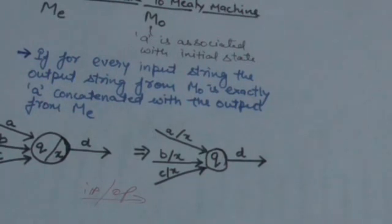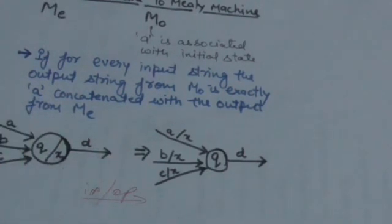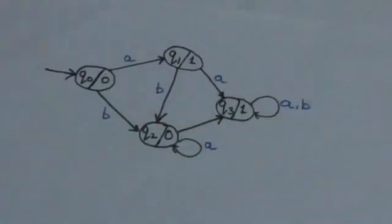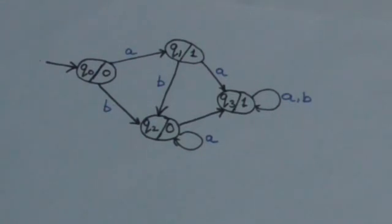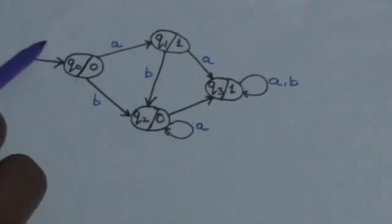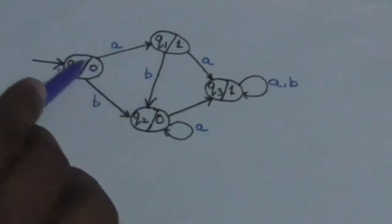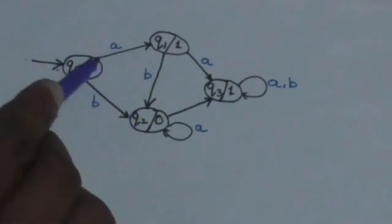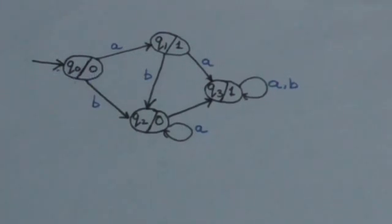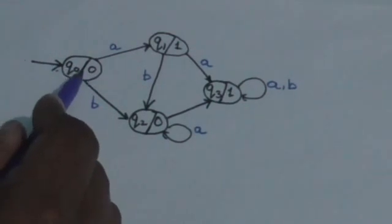So when we convert a Moore Machine to a Mealy Machine, we transform each state in the same way. We remove the output symbol associated with each state and label its incoming edges with that symbol. Now consider the initial state Q0 — there is no incoming edge on Q0, so there is no transition to this state and no edge on which we can label its output symbol.